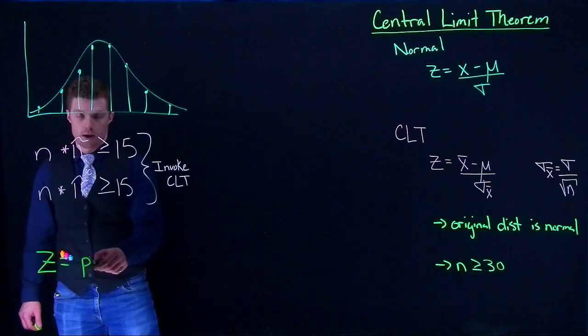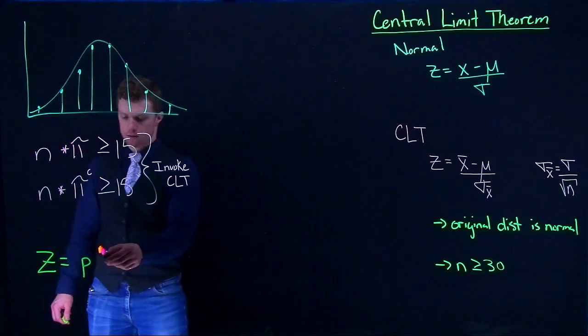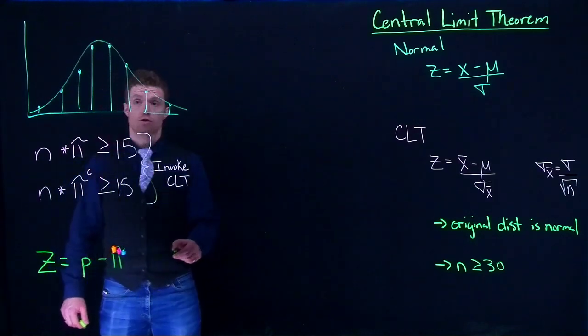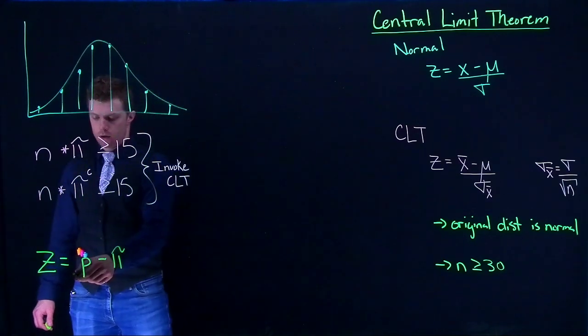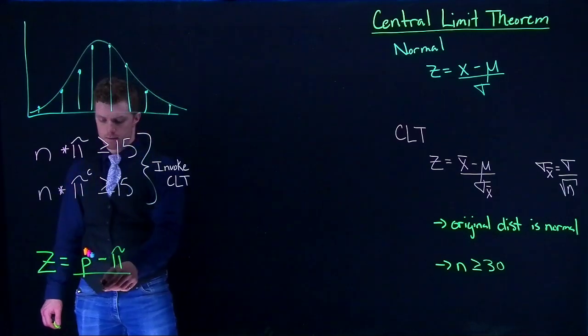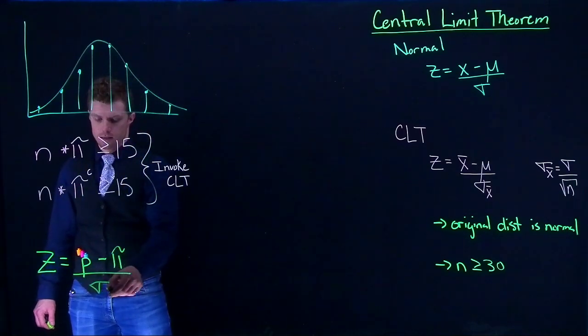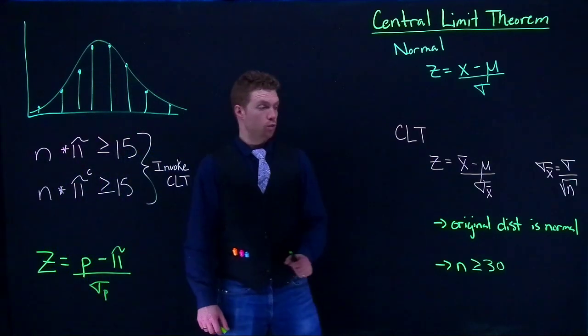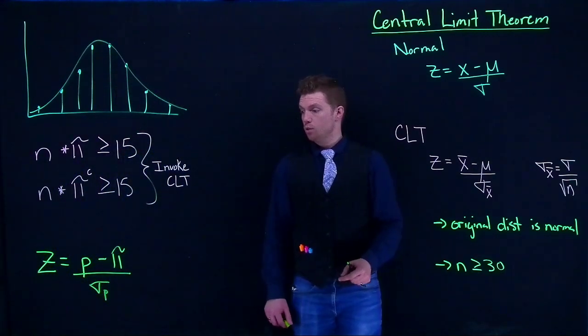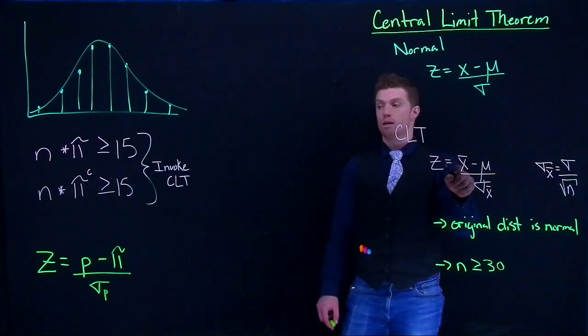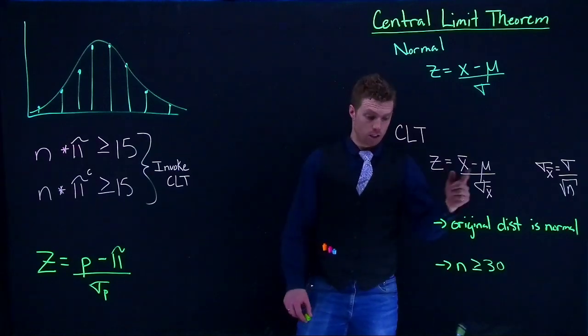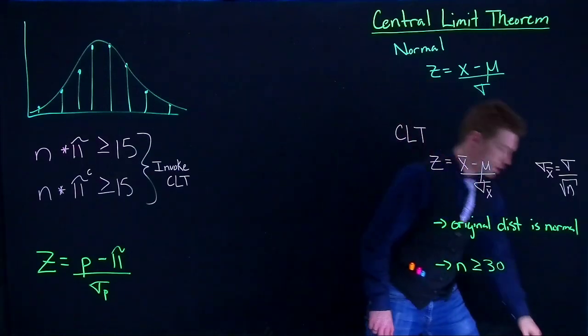It's still a z equation, but it's now going to be equal to p, which is our sample proportion, minus π, our true proportion, and we are going to divide it by σ_p. So really the only things that we changed were: instead of x̄, now we're talking about p, it's going to be the sample proportion. π is the true proportion, just like this is the true mean.